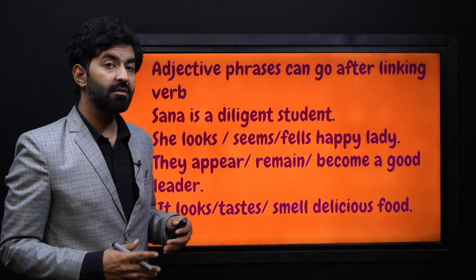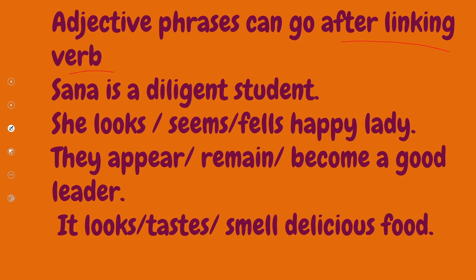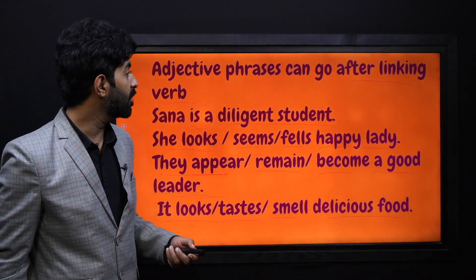Now let's see if we can add adjectival phrases after our linking verb. 'Sana is a diligent student' — 'diligent student' is our adjectival phrase. She looks, or seems, or feels — 'happy lady.' They appear, remain, become — 'a good leader.' It looks, or tastes, or smells — 'delicious food.' After our linking verb, we can add adjective phrases that give us more information about our nouns and pronouns.